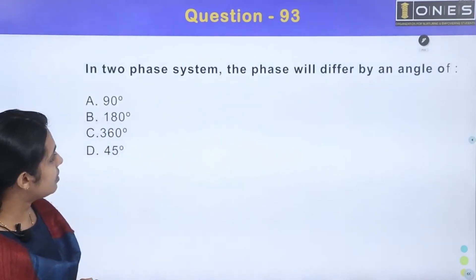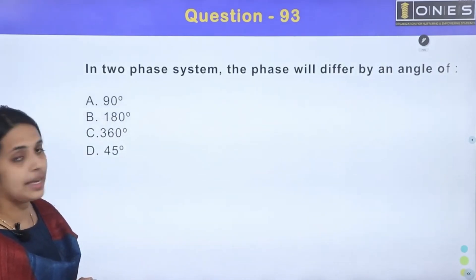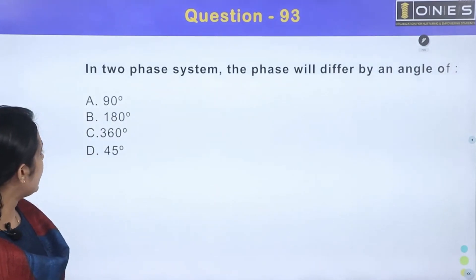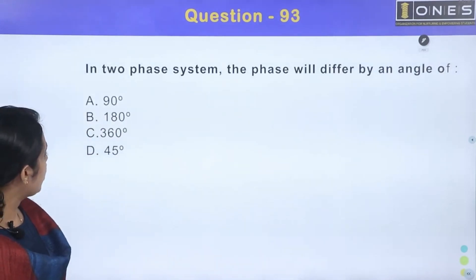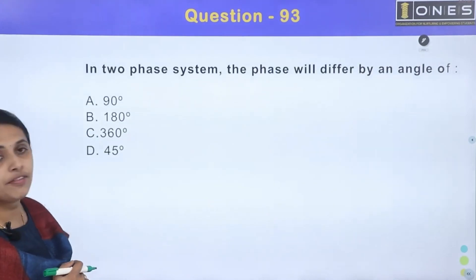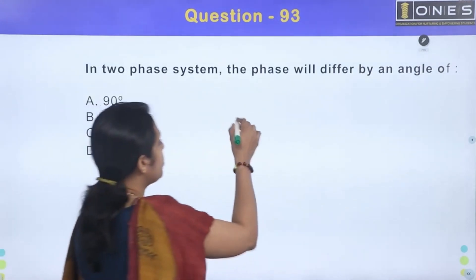In a two-phase system, the phases will differ by an angle of: option A — 90 degrees, option B — 180 degrees, option C — 360 degrees, and option D — 45 degrees.